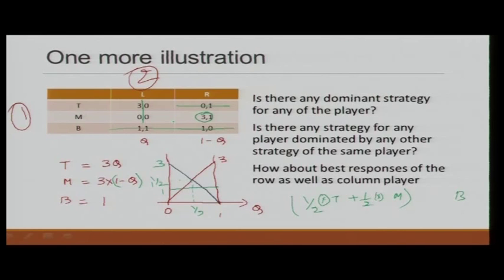So we can eliminate B. This elimination cannot be done under the strictly dominant strategy equilibrium concept, but it can be used in the context of elimination of strictly dominated strategies — including domination by mixed strategies. Then we see that L strictly dominates R, so R can also be removed. Player 1 will not play T because M gives strictly higher payoff. The outcome is obtained from Iterative Elimination of Dominated Strategies.